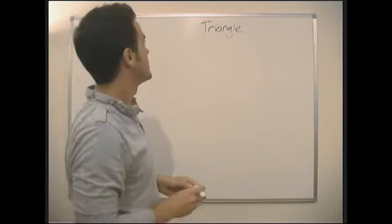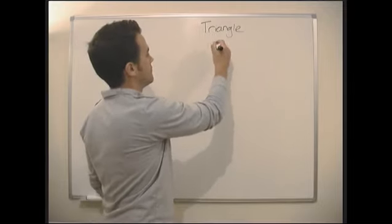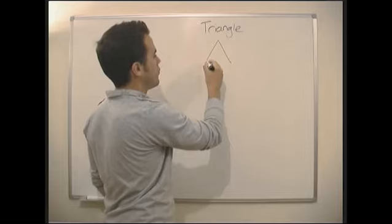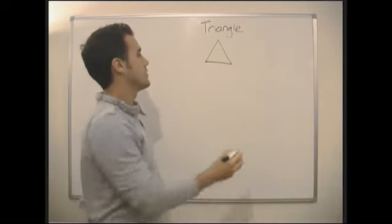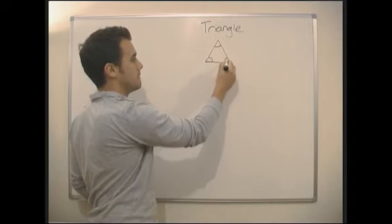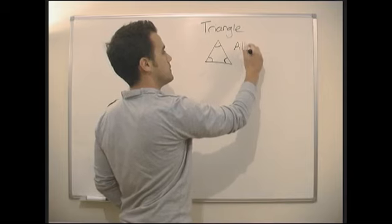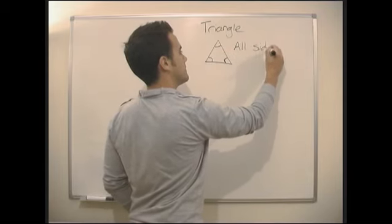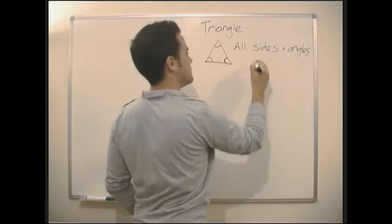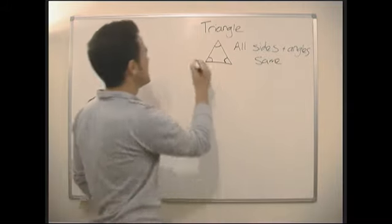And obviously everyone knows all triangles. Tri meaning three, angle meaning there's three angles. So, we've got four types of triangle. The first triangle we've got has got all the sides the same and the angles the same. So all sides and angles the same. Okay, and that's an equilateral.